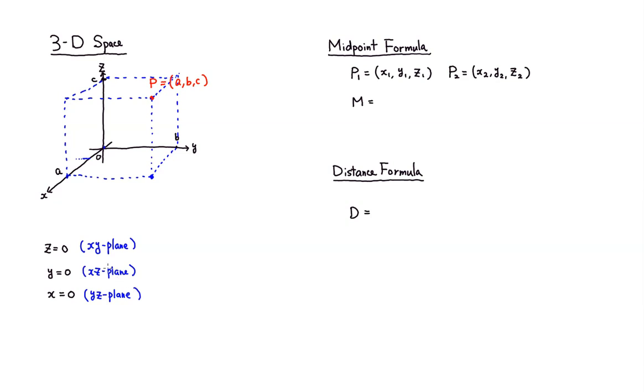Now we have the basics of a three-dimensional coordinate system. We can do the midpoint and the distance formula. Midpoint is defined exactly the same way, you just have a third coordinate. So if you want to find a midpoint between P1, whose coordinates are X1 comma Y1 comma Z1, and P2, X2 comma Y2 comma Z2.